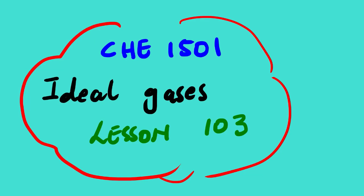Our lesson for today is Chemistry 1501, lesson 103, on ideal gases. In lessons 101 and 102 of this chapter, we went through the ideal gas equation and different theories dealing with the relationship between pressure, volume, and temperature. We also looked at Gay-Lussac's Law and Charles's Law.